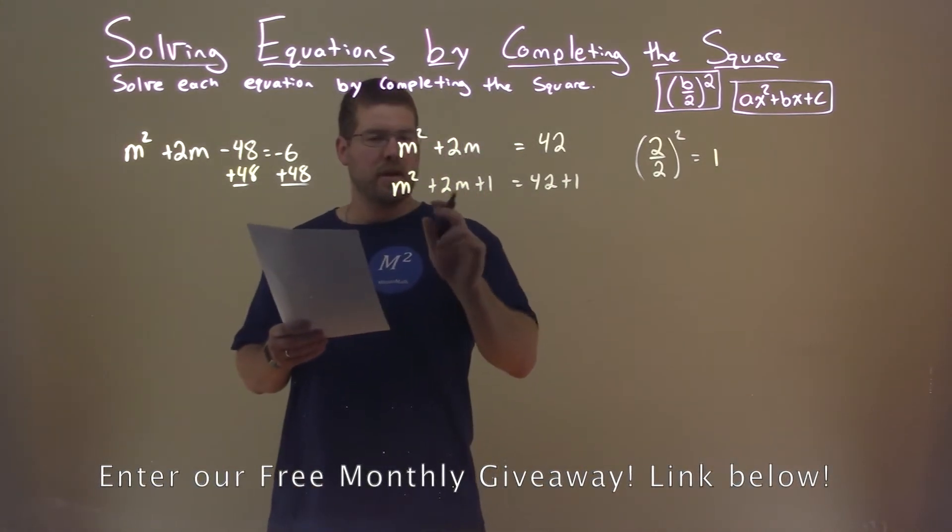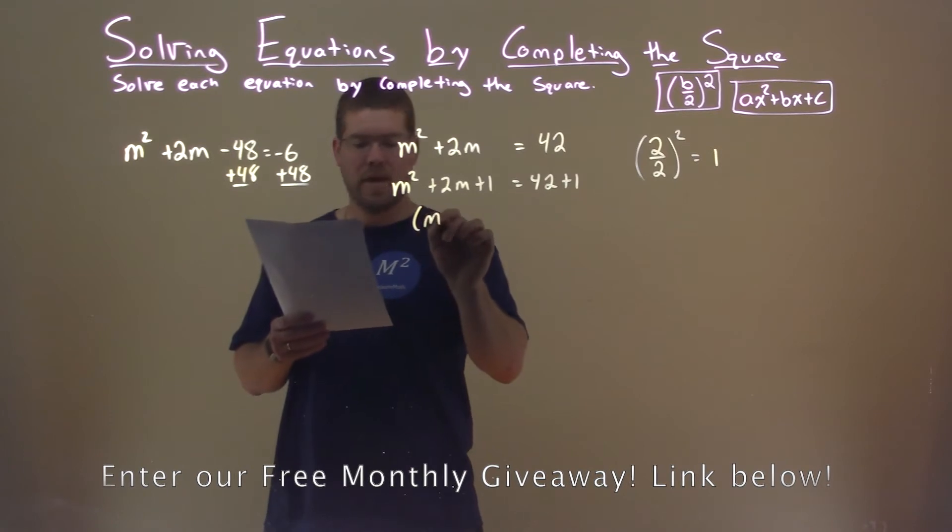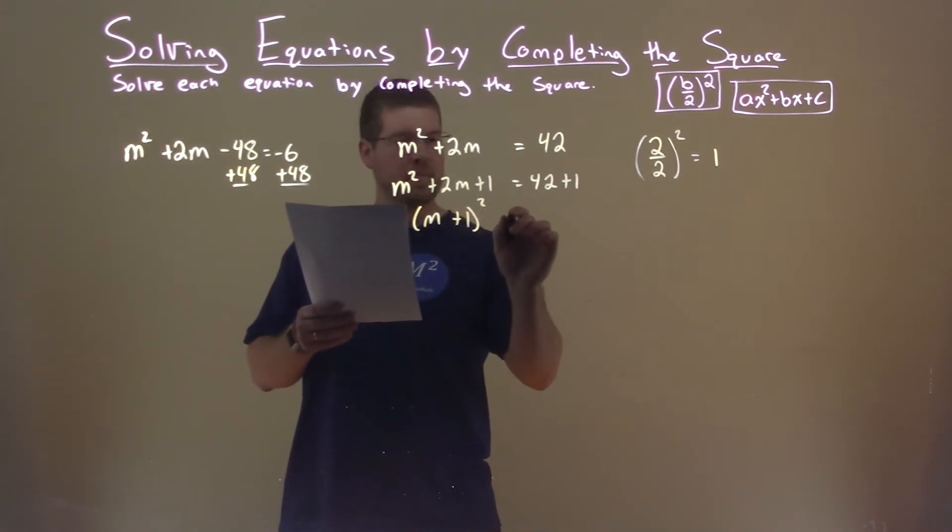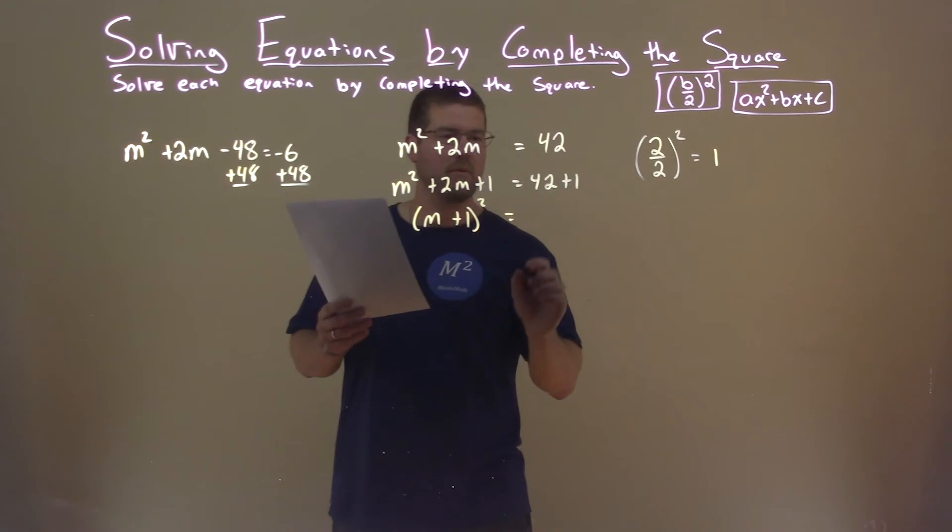Alright, left-hand side now is a perfect square. We have m plus 1 squared is equal to 42 plus 1, which is 43.